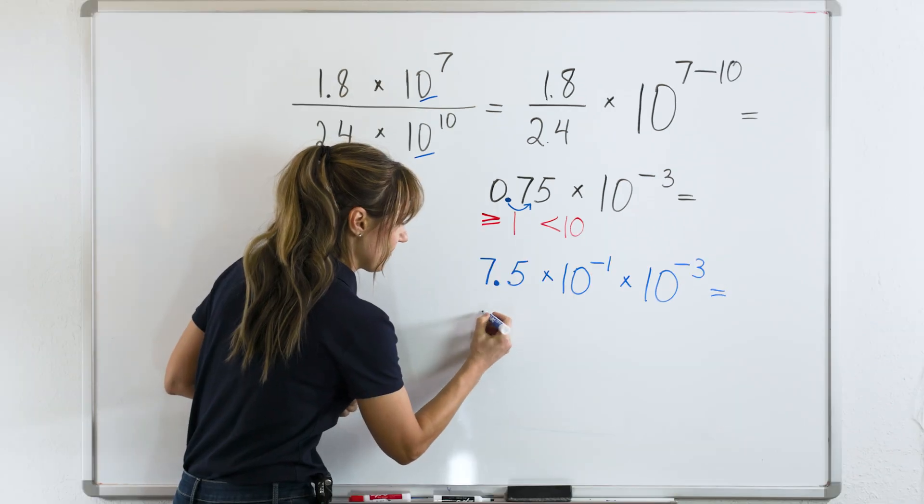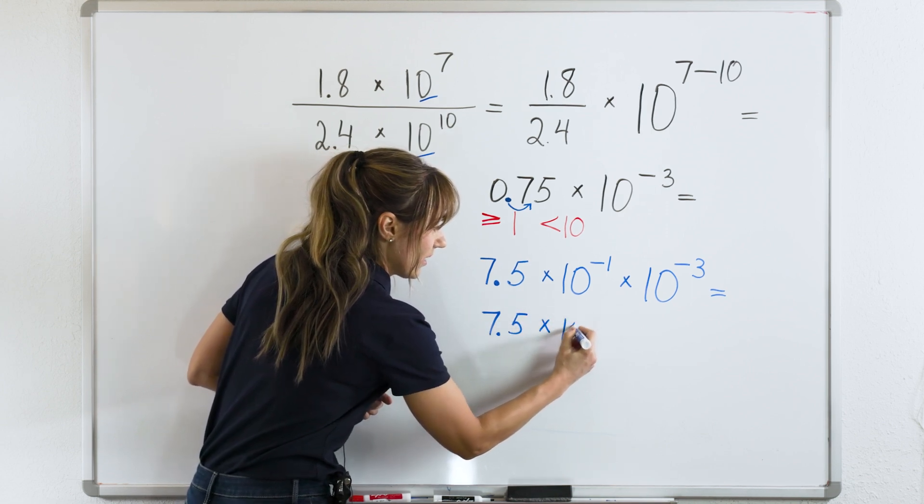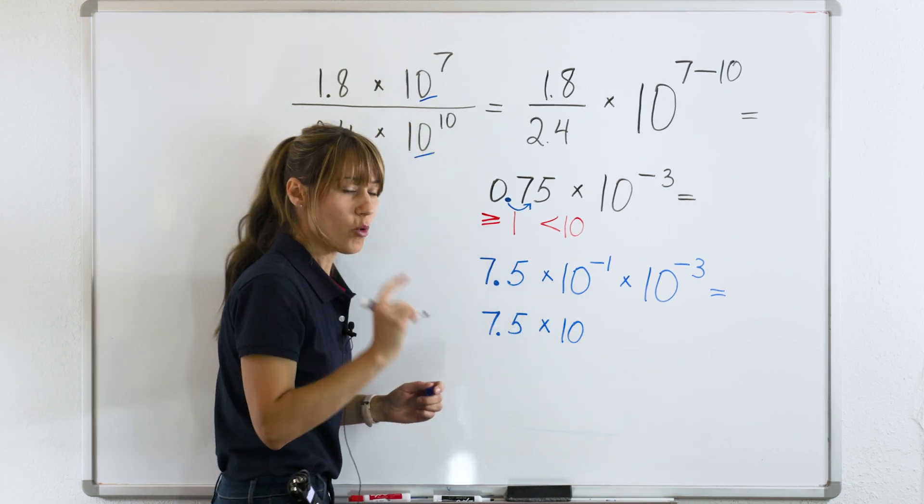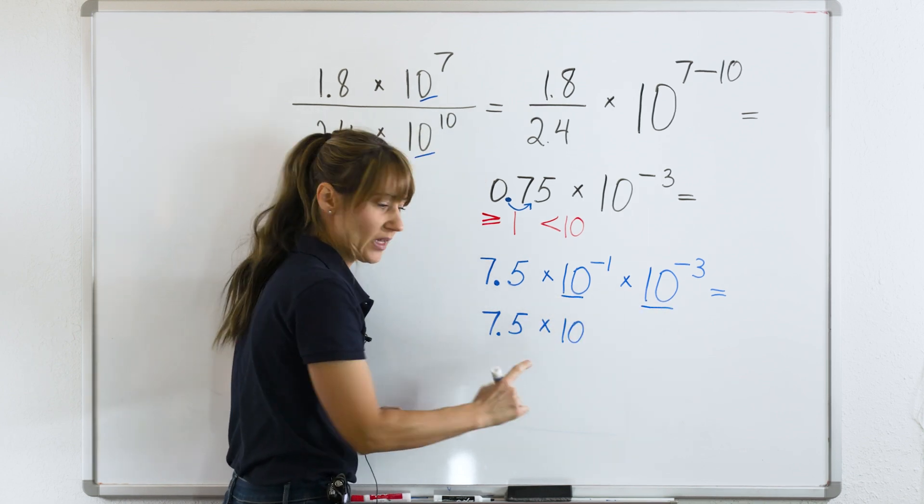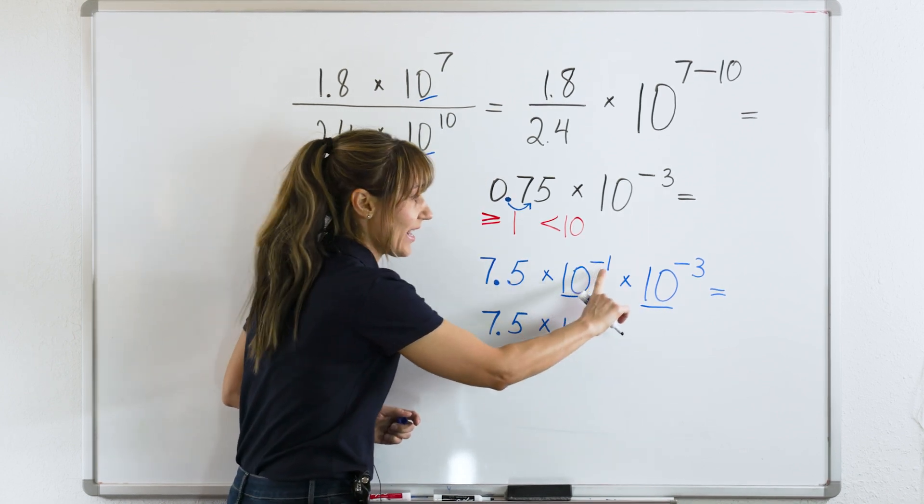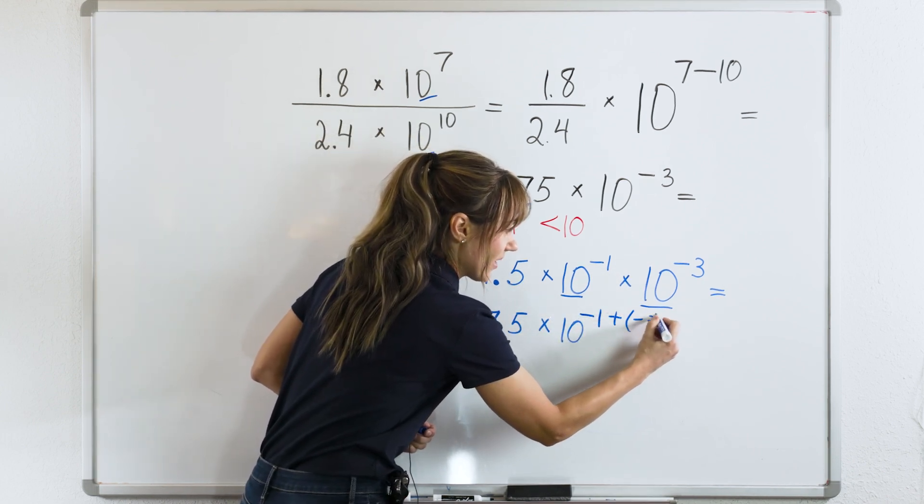Let's do it. So, we have 7.5 times 10 to the power of what? When we are multiplying with the same base, we keep the same base and add the exponents. So, negative 1 plus negative 3.